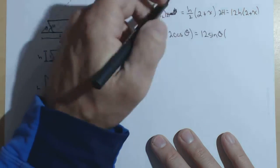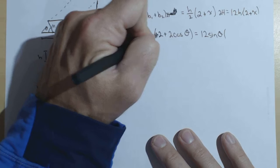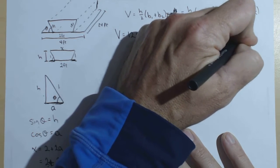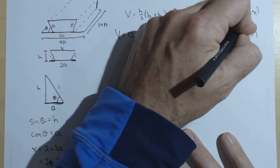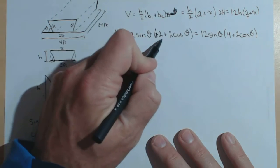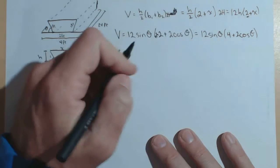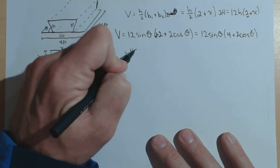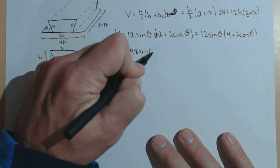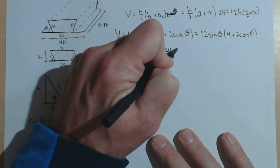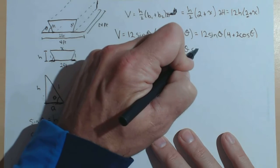Oh, and I'm missing a 2. 2 plus, 4 plus 2 cosine of theta. I forgot this 2 here. And then we're putting in 2 plus 2 cosine theta for x. Equals, I'm going to distribute this guy. Okay, and I've got 48 sine theta plus 24 sine theta cosine theta.